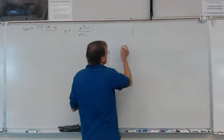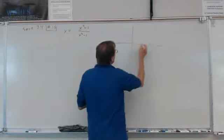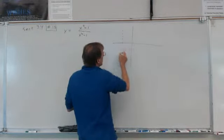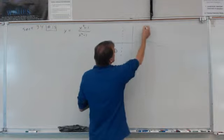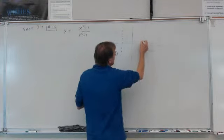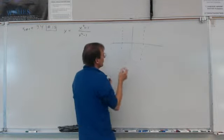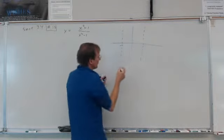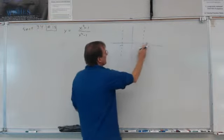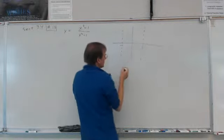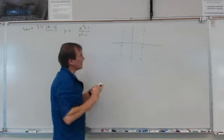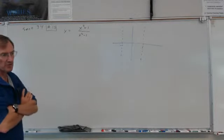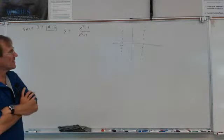Let's draw a graph and start thinking about this. There's going to be a vertical asymptote at negative 1 and a vertical asymptote at positive 1, because that's where the function blows up. The function won't be defined at those points, and because the denominator goes to 0, it will be a vertical asymptote.